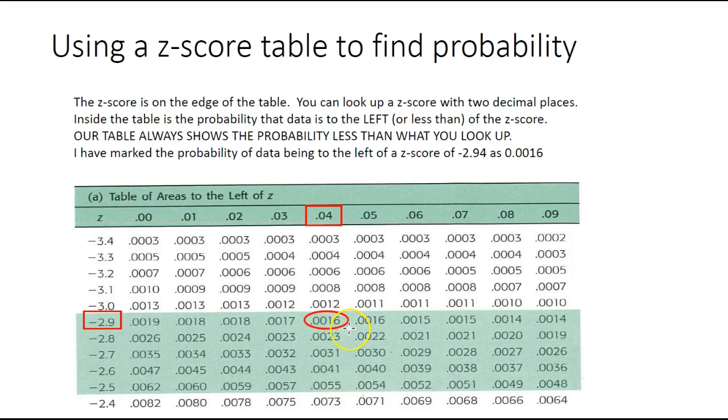0.0016. This table—any number inside the table—is always the amount of data to the left of what you're looking at. Probability less than, or the amount of data to the left, always.